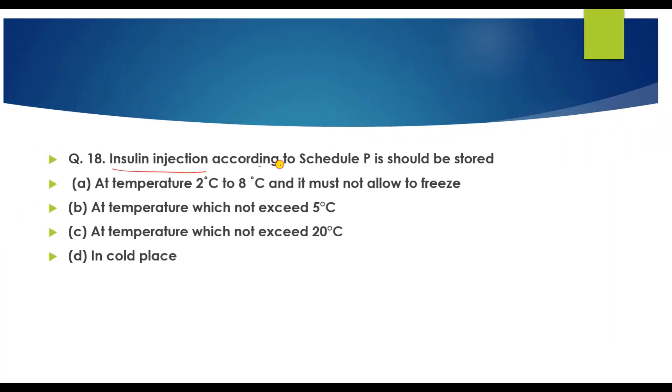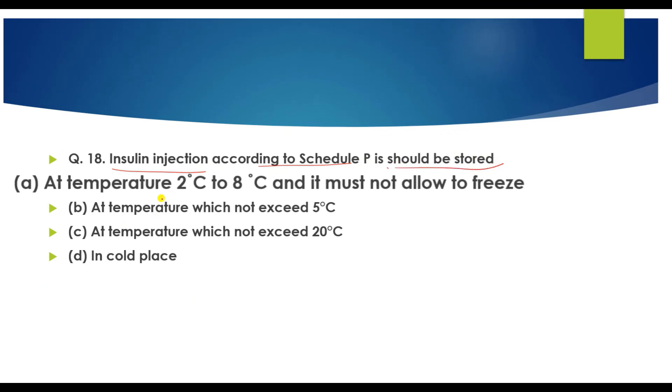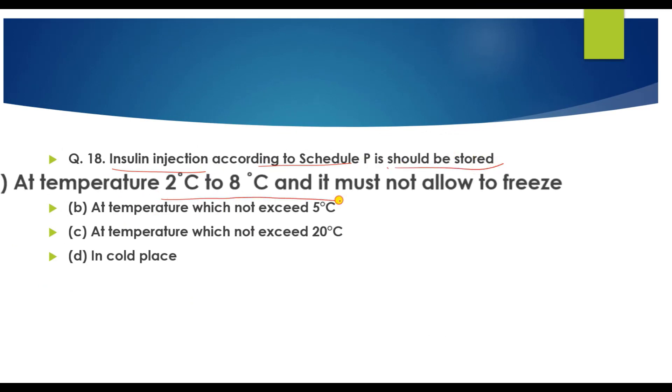Question number 18: According to Schedule P, insulin injection should be stored at 2 to 8 degrees centigrade. It should be stored in a refrigerator but not frozen.